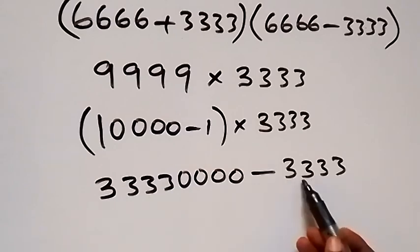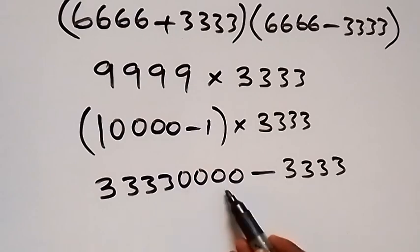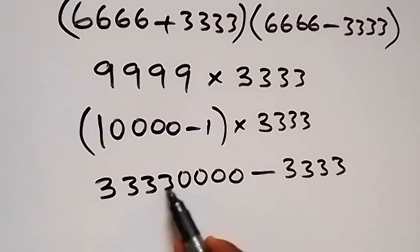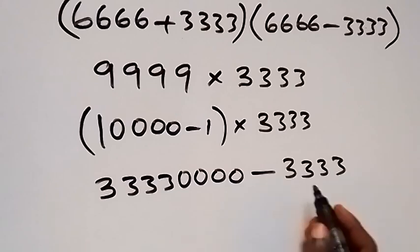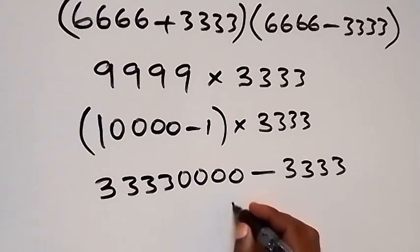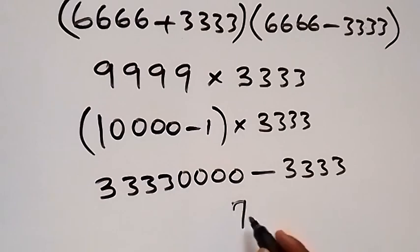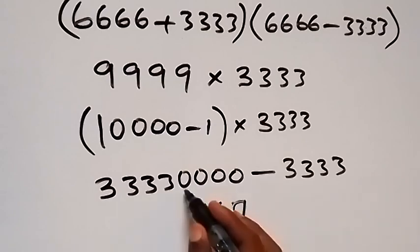When we borrow 1, this becomes 10. We shift 1 here, this remains 9, this remains until we get it. So we have 10 minus 3, that's 7. Here remains 9, then minus 3, that's 6. Also here is 9, then minus 3, that's 6. Also here remains 9, that's also 6 here.